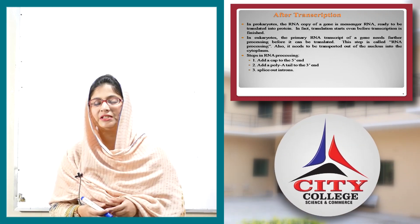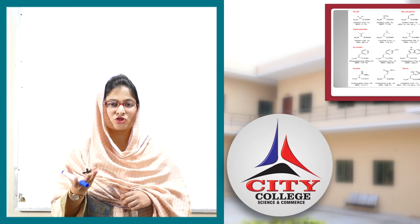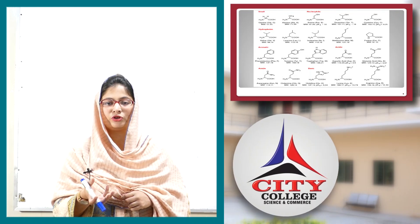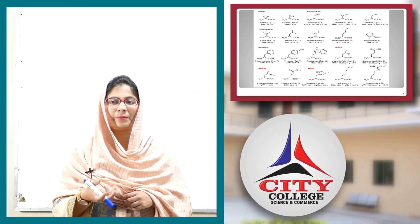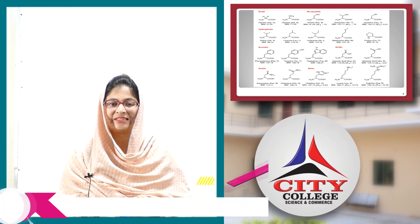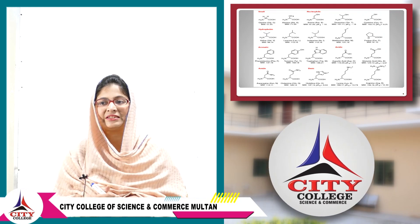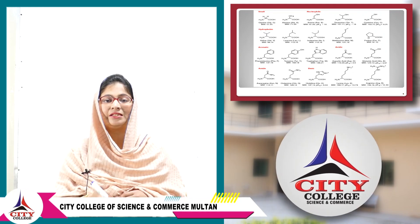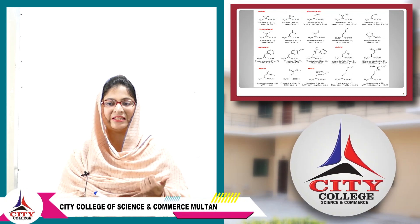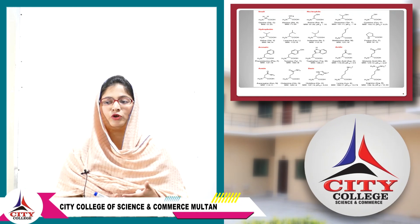Moving towards translation, we have 20 basic amino acids which are coded by codons. Some small amino acids include glycine, alanine, and nucleophilic ones like serine, threonine, and cysteine. Hydrophobic amino acids include valine, leucine, isoleucine, methionine, and proline.